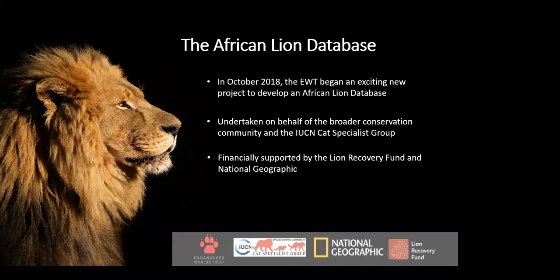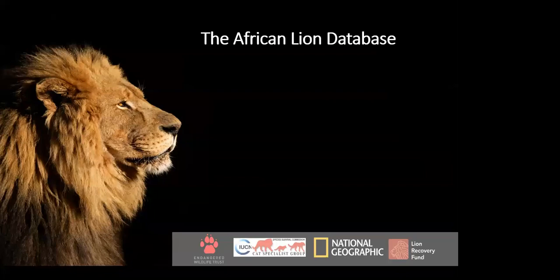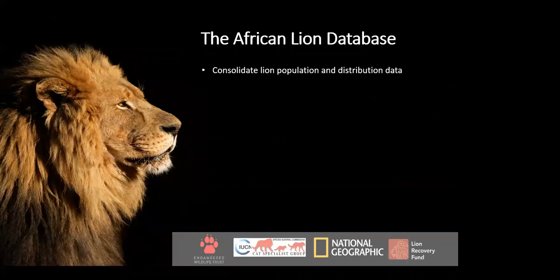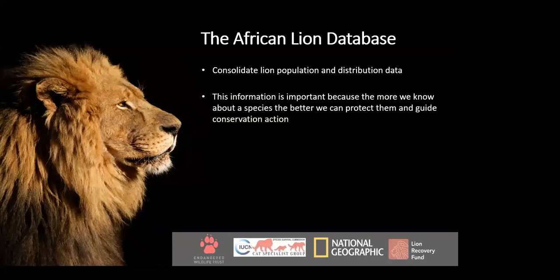The project is undertaken with financial support from the Lion Recovery Fund and National Geographic. The overarching task of the ALD is to consolidate lion population and distribution data. Plans are underway to extend it to include anthropogenic threats — such as lions killed through poisoning, conflict, or poaching. This kind of information is important because the more we know about a species, the better we can protect them by guiding conservation action and prioritizing funding in areas that need it most.